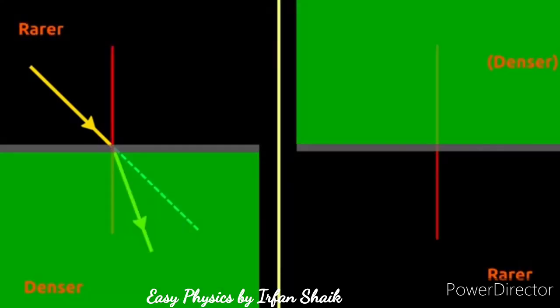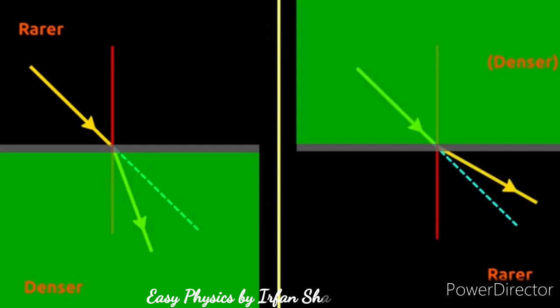When light travels from rarer medium to denser, it bends towards the normal line. When it travels from denser medium to rarer, it bends away from the normal.